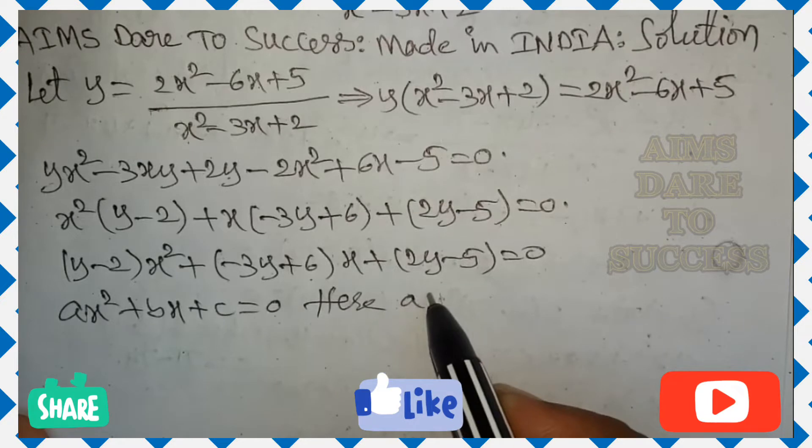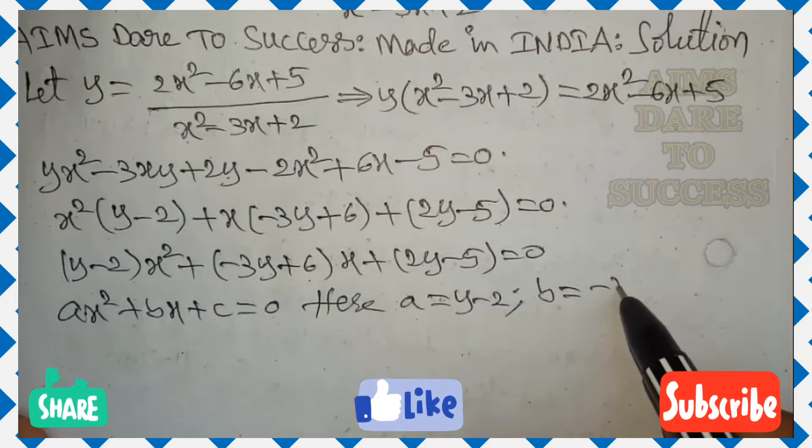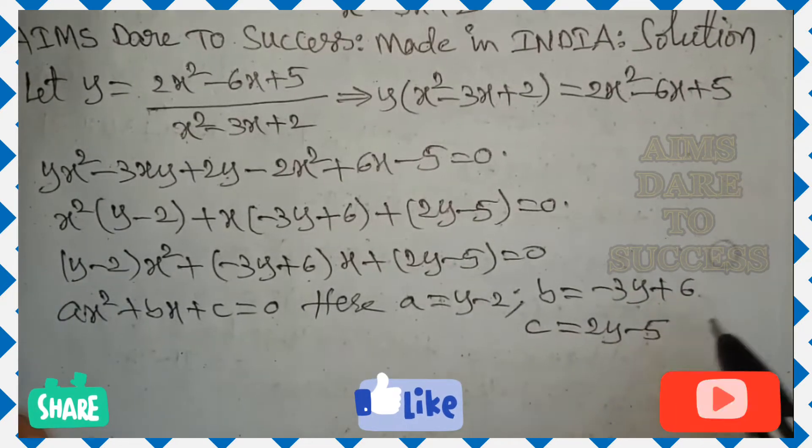But from a, b, c values, write a value y minus 2, b value minus 3y plus 6, c value 2y minus 5. After that,